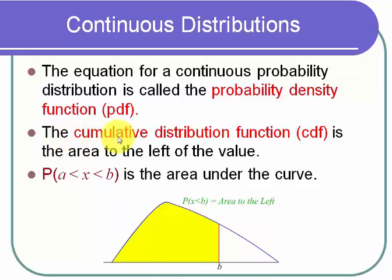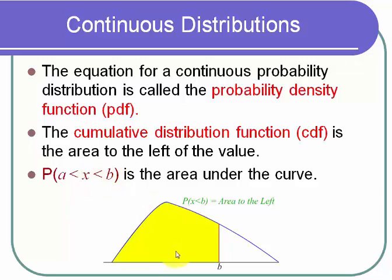I'm going to define the cumulative distribution function as the area to the left of some value. Here's a value b — the cumulative distribution function is the area to the left of b, above the x-axis and below the curve. The probability that x is between a and b is the area above x = a and below x = b, under the curve and above the x-axis. If you wanted the probability that x is greater than b, that would be the area to the right of b, below the curve and above the x-axis.